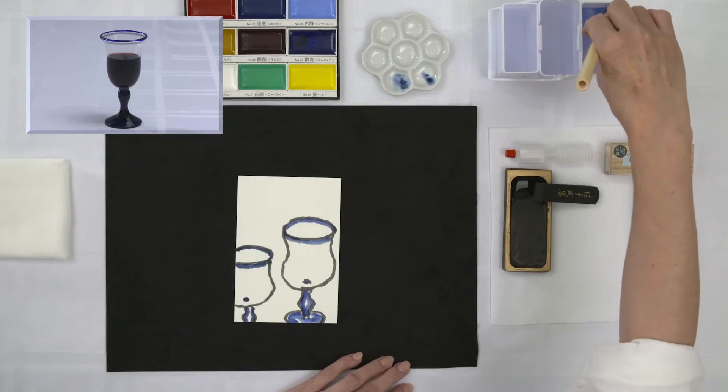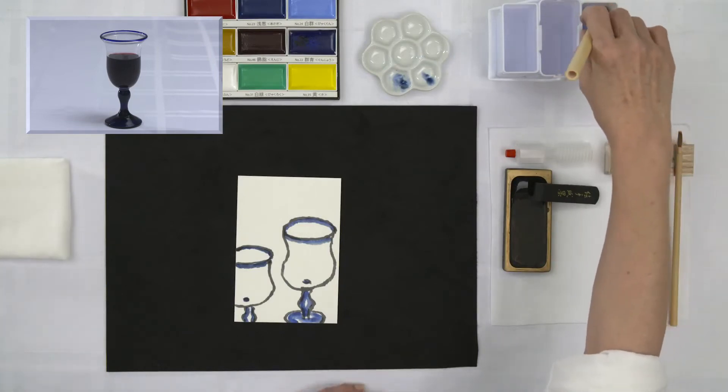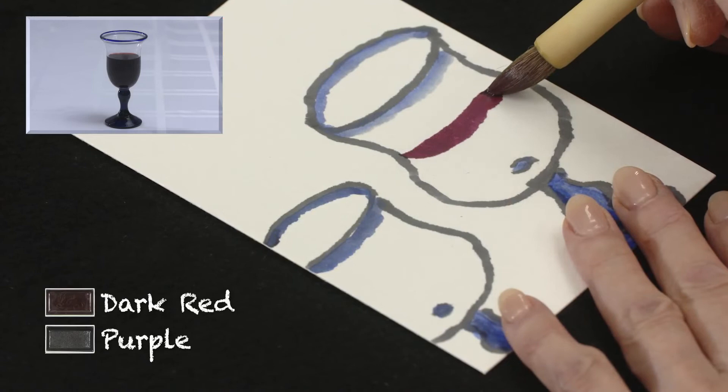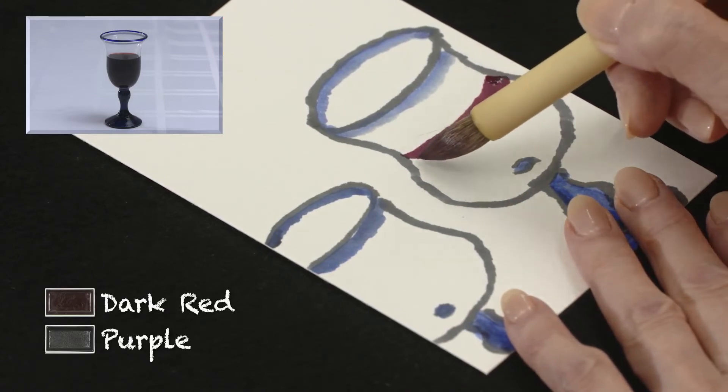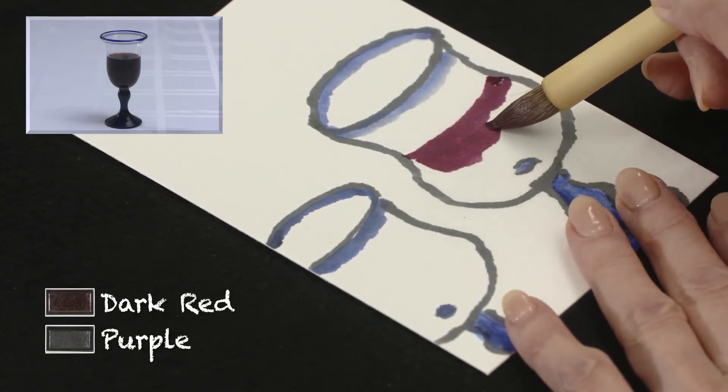Wash the brush well when changing the colors. With the gradient brush, mix dark red and purple to paint the red wine.